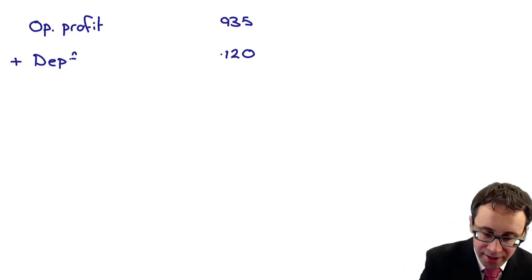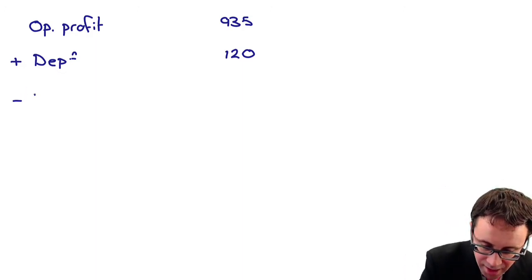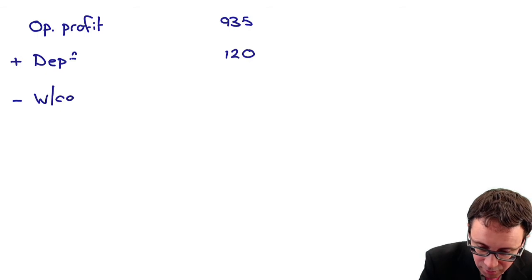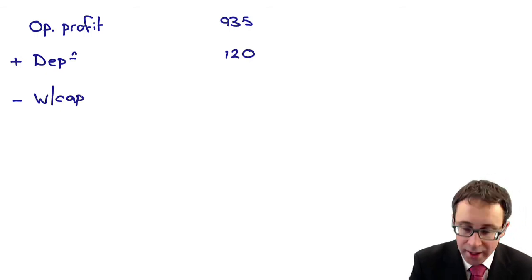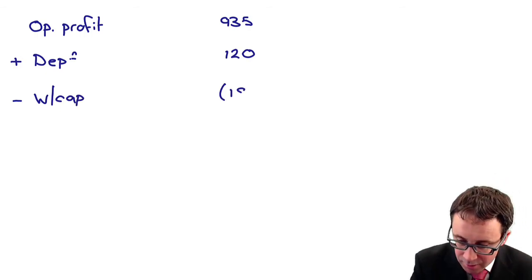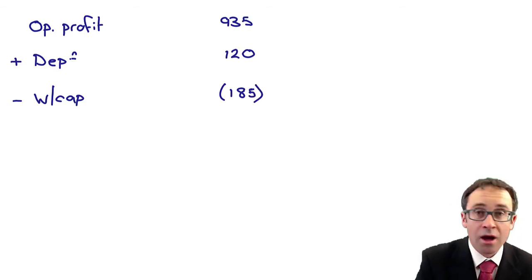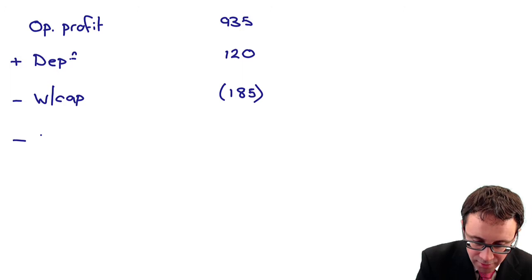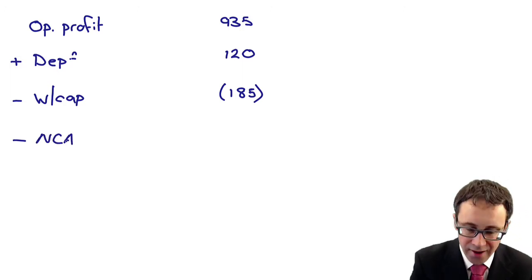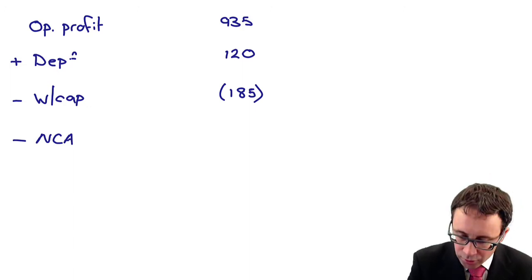You've then got your investments. So we then have to deduct our working capital investment, is that there at 185. You've then got your investments in your non-current assets. So effectively, property, plant and equipment. We've got investment there at 420.